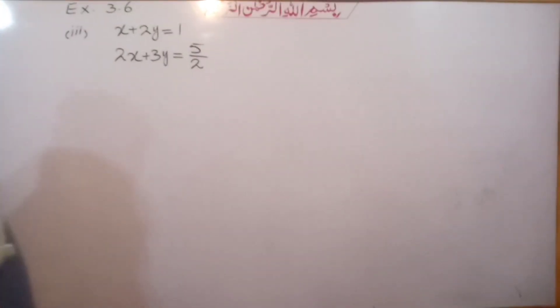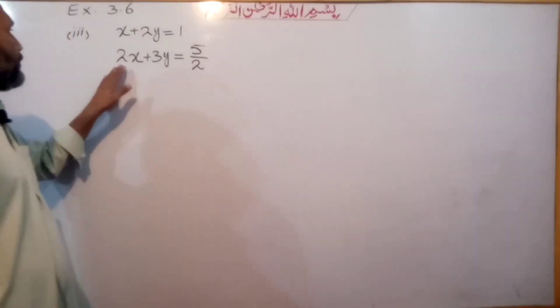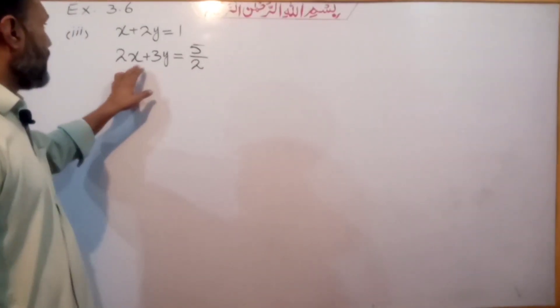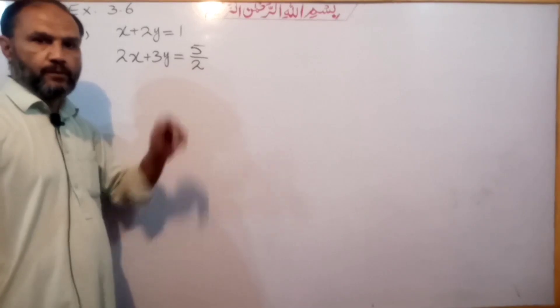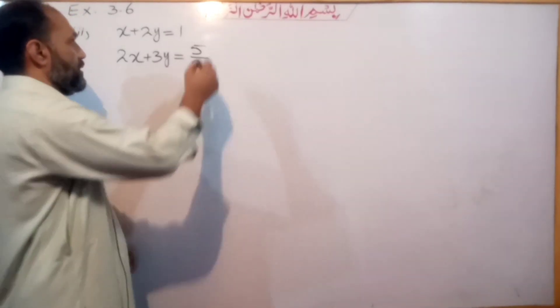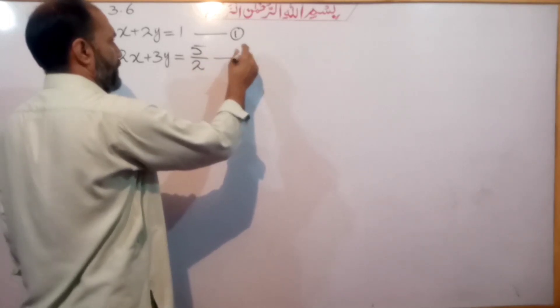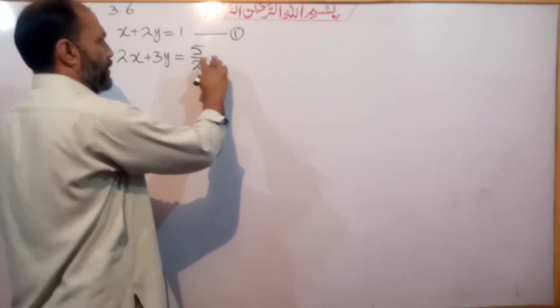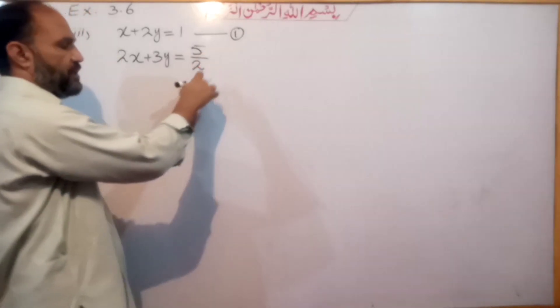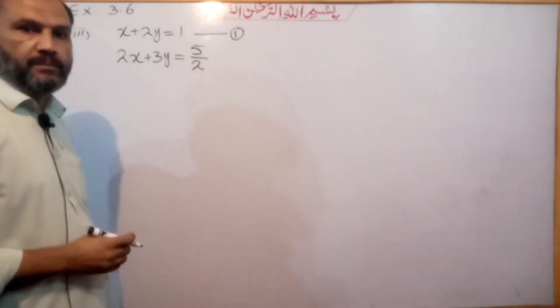Question number 3: the system of equations is x plus 2y equal to 1, and 2x plus 3y equal to 5 over 2. These are equation number 1 and equation number 2, and we will work on their simplification.